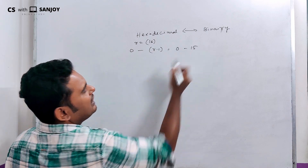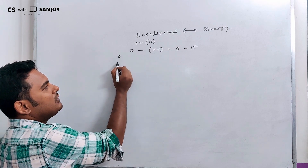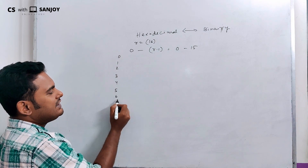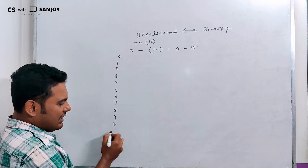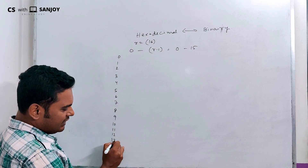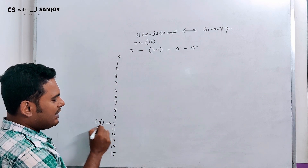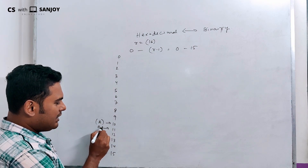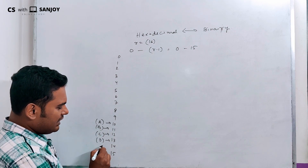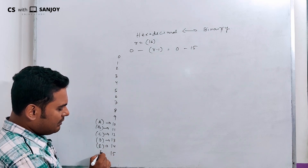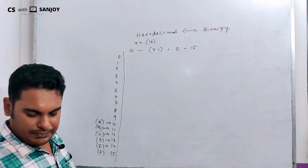That is 0 to 15 symbols. The unique symbols are 0, 1, 2, 3, 4, 5, 6, 7, 8, 9. For values 10 through 15, we use letters: 10 is A, 11 is B, 12 is C, 13 is D, 14 is E, and 15 is F. So that is the 0 to 15 representation.